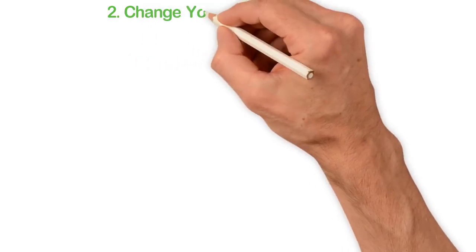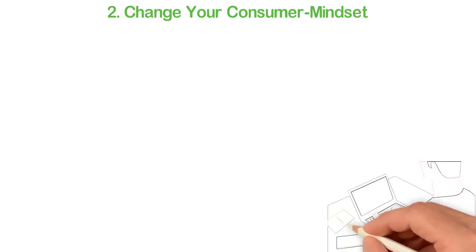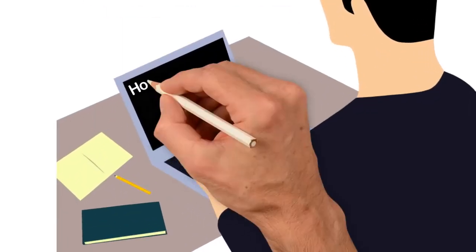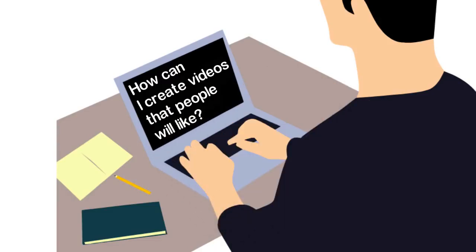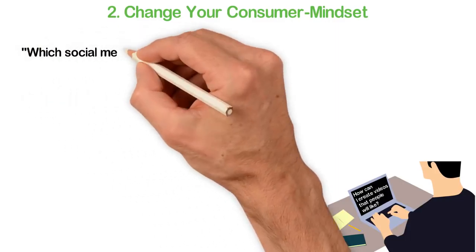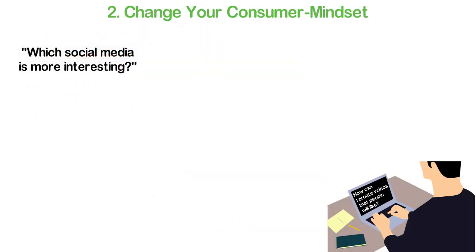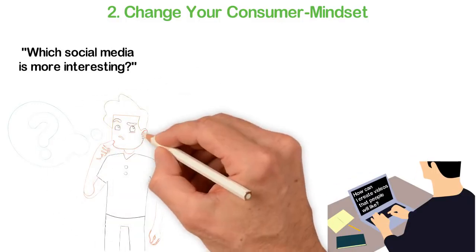Number 2: Change your consumer mindset. When I got to know about Facebook, my first concern was: can I sell through it? When I got to know about how popular YouTube is, my first question was: how can I create videos that people would like? Consumers don't think that way. Instead, they think: which social media is more interesting? Theirs is to consume, so they are not thinking of how to serve people and make money from them.